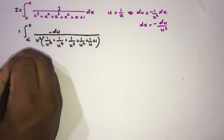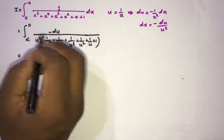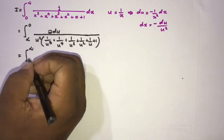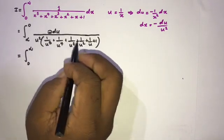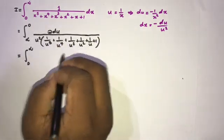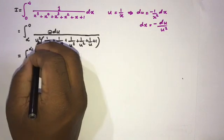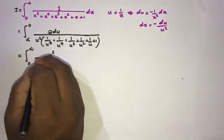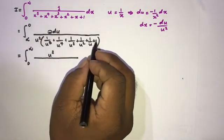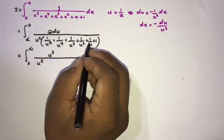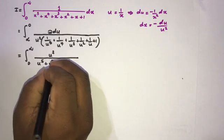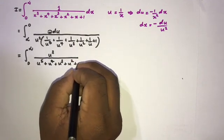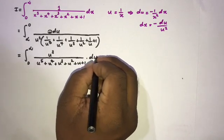When we swap the limits from infinity-to-0 to 0-to-infinity, the minus sign gets cancelled. Taking a common denominator of u⁵ inside the parenthesis, u squared cancels leaving u³ in the numerator, giving us the integral from 0 to infinity of u cubed over u⁵ plus u⁴ plus u cubed plus u squared plus u plus 1, du.